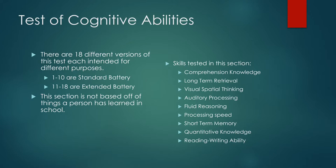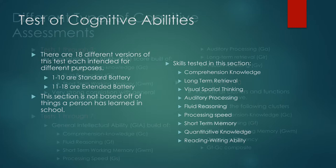Let's look at the cognitive ability section of this test. There are 18 different versions of tests, each intended for different purposes. Tests 1 through 10 are the standard battery and 11 through 18 are the extended battery. These sections are not based on things that a person has already learned in school. Skills tested in this section include comprehensive knowledge, long-term retrieval, visual-spatial thinking, auditory processing, fluid reasoning, processing speed, and more.